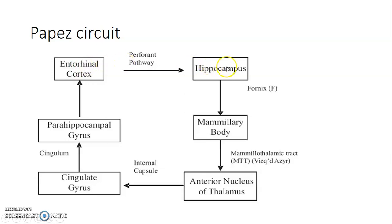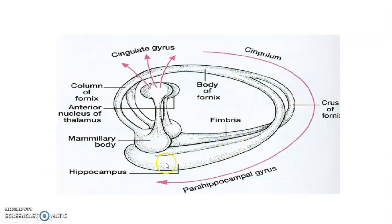Again, the Papez circuit: from the entorhinal cortex to the hippocampus, from the hippocampus through the fornix to the mammillary body, through the mammillothalamic tract to the anterior nucleus of the thalamus, which projects to the cingulate gyrus, and that takes the information back to the parahippocampus that projects to the entorhinal cortex. The entorhinal cortex — which is the parahippocampus and uncus — sends to the hippocampus, then through the fimbria, the posterior cruces of the fornix, the body of the fornix, the anterior columns of the fornix, to the mammillary body of the hypothalamus. The mammillothalamic tract carries information to the anterior nucleus of the thalamus, which projects to the cingulate gyrus and through the cingulum back to the hippocampus.